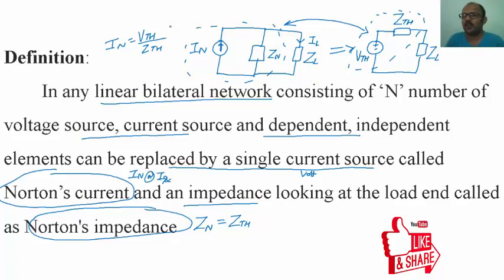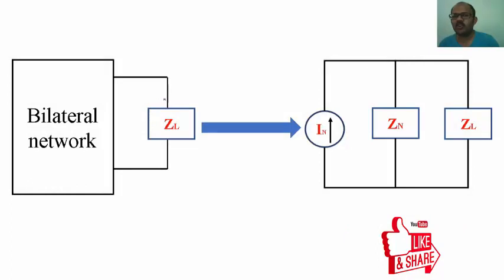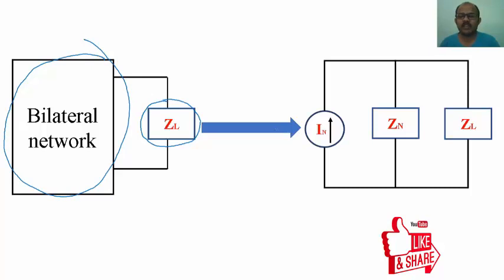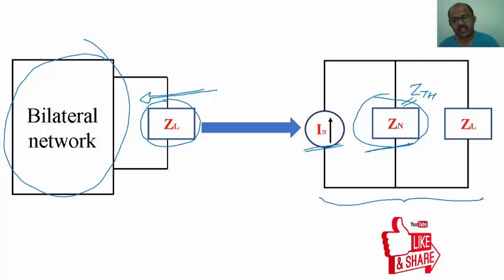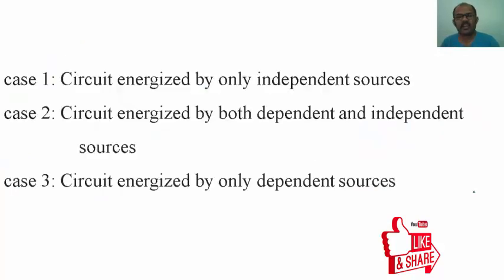You will have a large circuit where only one parameter — let's call it ZL — is variable. The entire static bilateral network can be replaced by a single Norton's current source in parallel with Norton's impedance, which is the impedance seen looking from the load terminals. Note that Norton's current IN, ZTH or ZN, and ZL are all connected in parallel, whereas in Thevenin's theorem these three elements are connected in series.